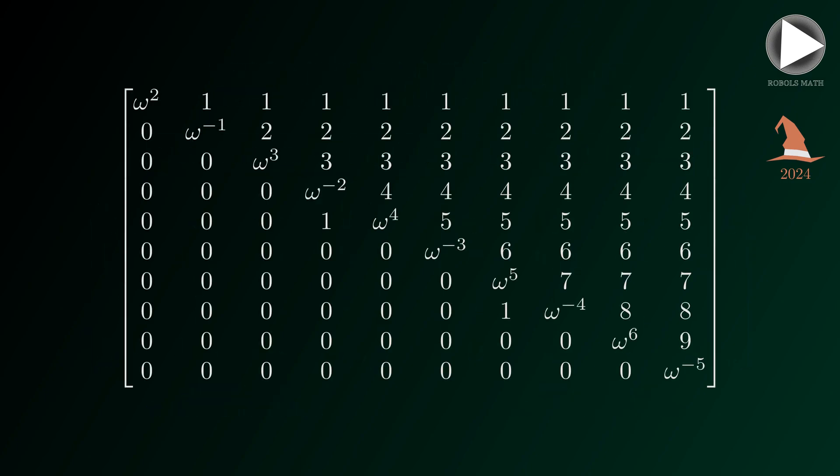The matrix we have is an upper triangular matrix if the ones in the fifth and eighth rows are zeros instead. So our first step for our solution would be to remove those ones by using elementary row operations.